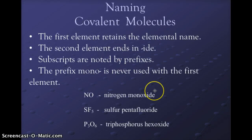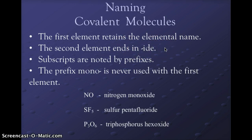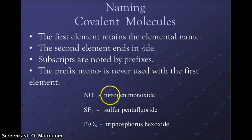For covalent molecules, when we name them: the first element retains the elemental name; the second element will always end in -ide. We take the subscript and note them by prefixes. The prefix mono will never be used with the first element.